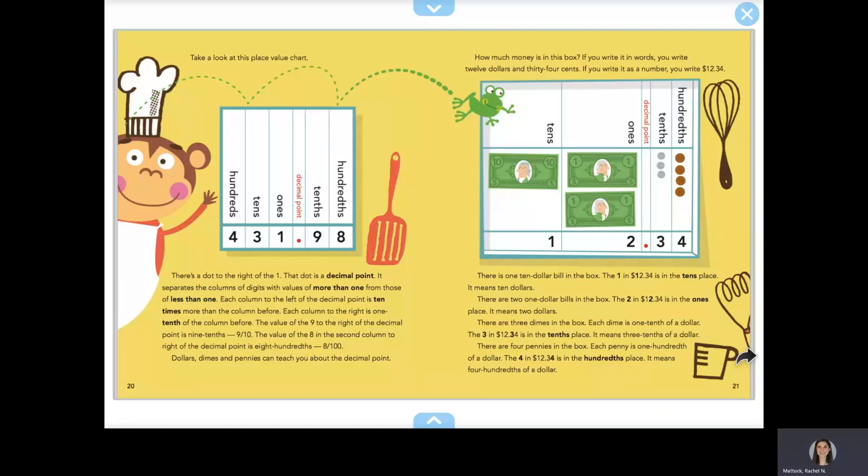There is one ten dollar bill in the box. The one in $12.34 is in the tens place. It means ten dollars. There are two one dollar bills in the box. The two in $12.34 is in the ones place. It means two dollars.